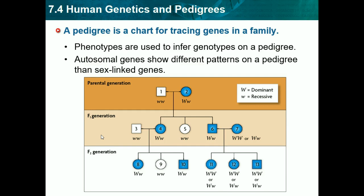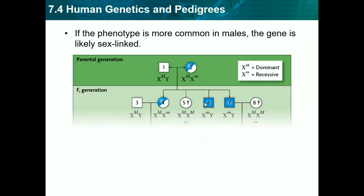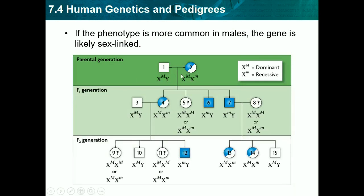Unshaded individuals don't have the disorder. Sometimes pedigrees show genotypes — in this one, capital W is dominant and lowercase w is recessive; sometimes they're given, sometimes you need to find them. If a phenotype is more common in males than females, the gene is likely sex-linked, because males must express sex-linked traits while females don't have to. A half-shaded circle indicates a carrier, and we only see half-shaded circles here — meaning only females can be carriers, because with XX they can carry it on one X but not the other, while males with XY must express it if they have it.